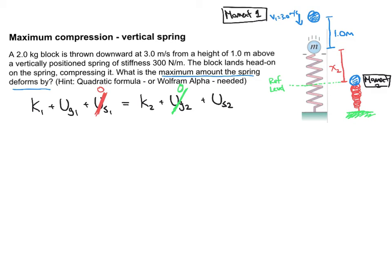And we actually have one more zero at moment two, at the point of maximum spring compression. The ball is at rest at that instant. So we can actually have K2 be zero as well. So it's not a six term equation. It's a three term equation, a bit more manageable.